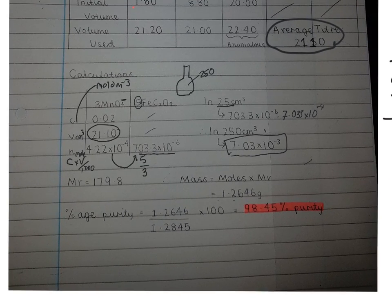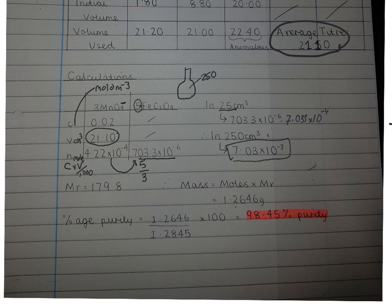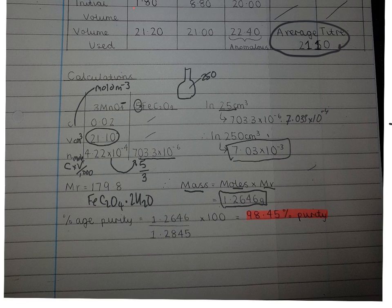We know the Mr of the iron ethanedioate is 179.8, because it's FeC₂O₄·2H₂O. We know its Mr, and therefore we know the mass equals the number of moles times the Mr. And that tells us that in the sample, in the pure sample, there would have been this mass.